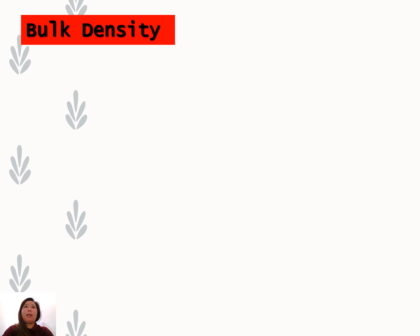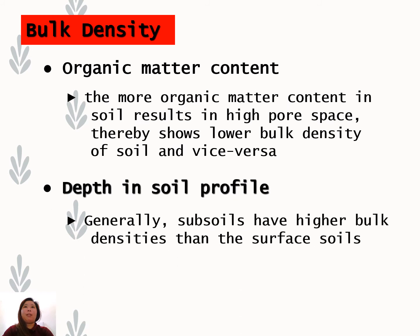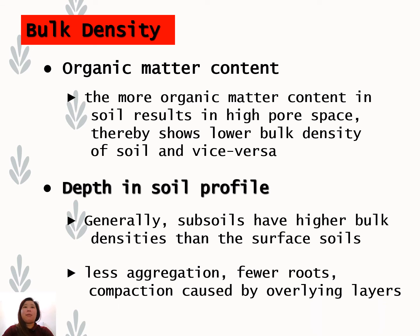Aside from pore spaces and texture, there is organic matter content and depth of the soil profile. More organic matter results in high pore space and therefore lower bulk density, and vice versa. For depth in the soil profile, subsoils generally have higher bulk densities than surface soils because of the pressure applied to the subsoils, resulting in less aeration, fewer roots, and compaction caused by the overlying layers.